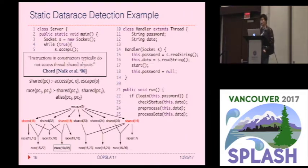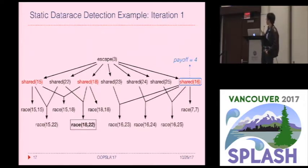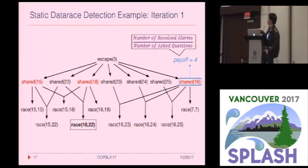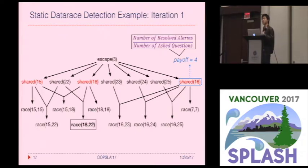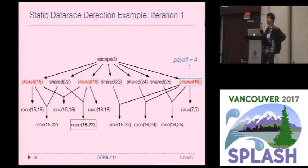So our approach will pose such root causes as questions to the user. In the very first iteration, we'll pick shared(16) as a question and pose it to the user. It has a payoff of four, defined by the number of resolved alarms divided by the number of questions asked. Note that I pick one tuple as a question, but in principle we can ask a set of questions in one iteration. For example, shared(15) and shared(16) is also a valid set, but it has a lower payoff — that's why I picked shared(16).